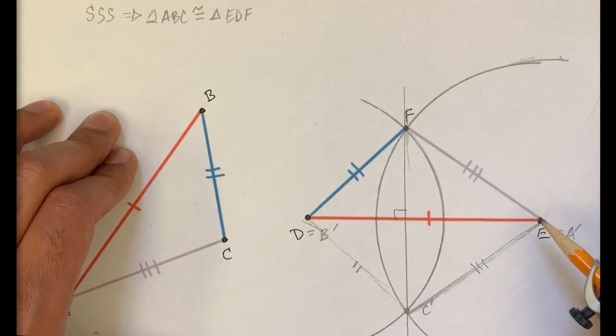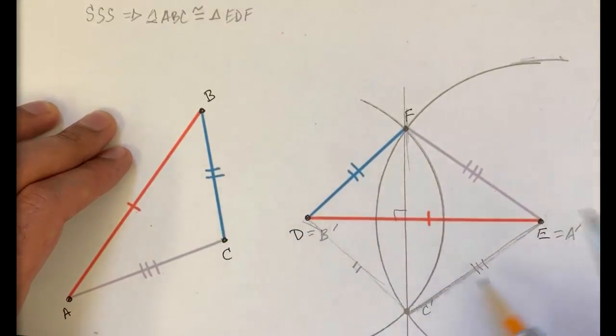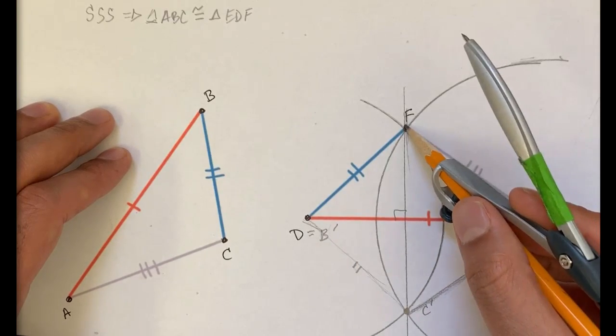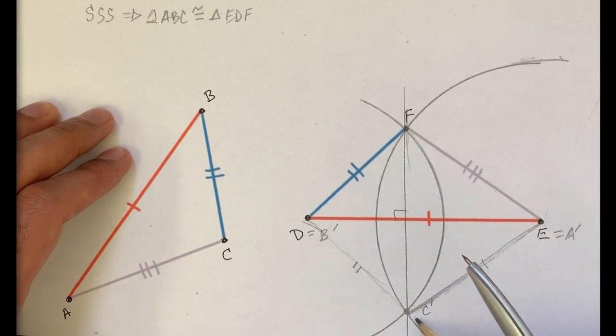Why is that helpful? Well, that tells us is if when we do that first transformation to make AB coincide with EF, if C prime doesn't end up here and it ends up there, we just have to do one more transformation.